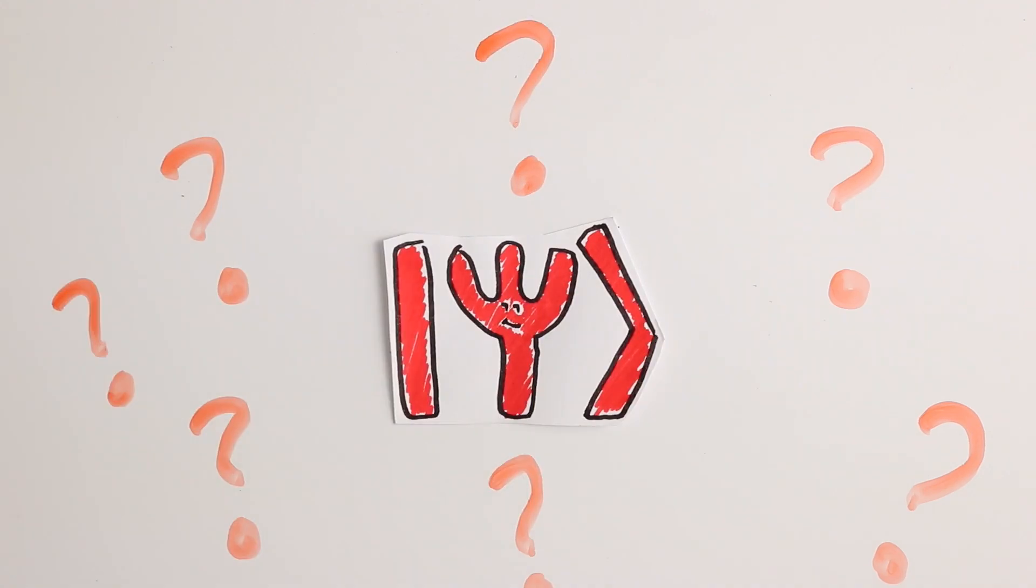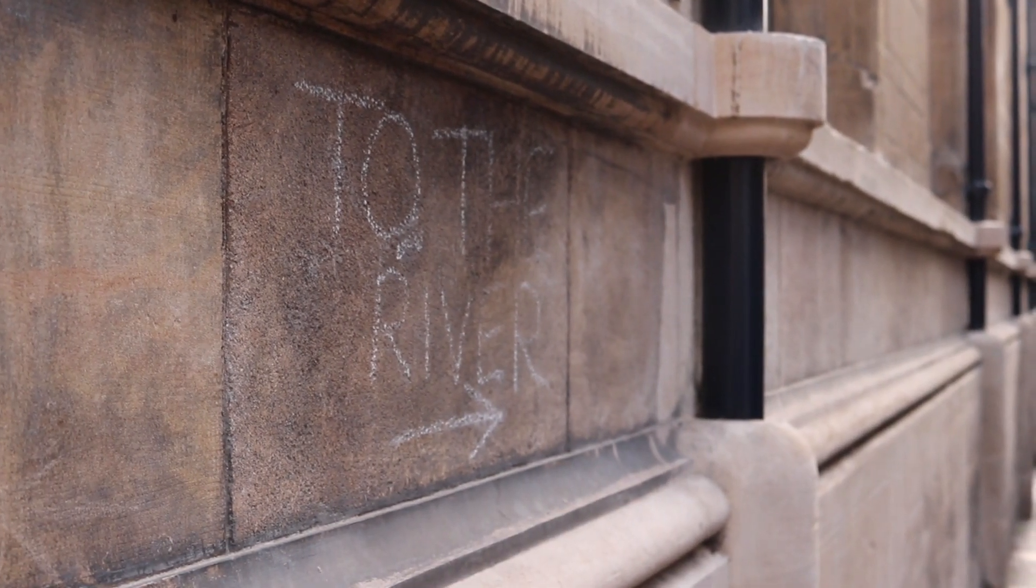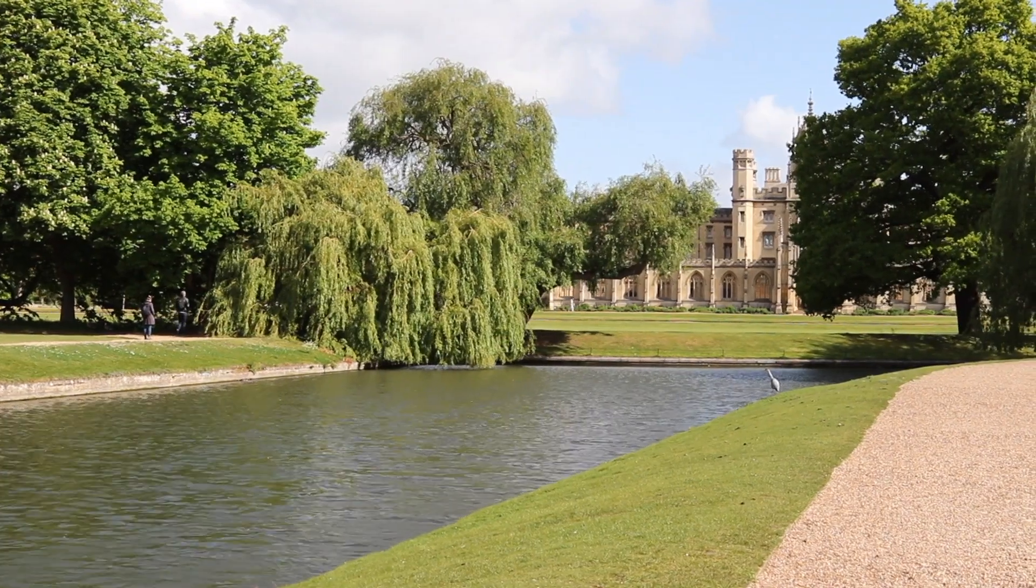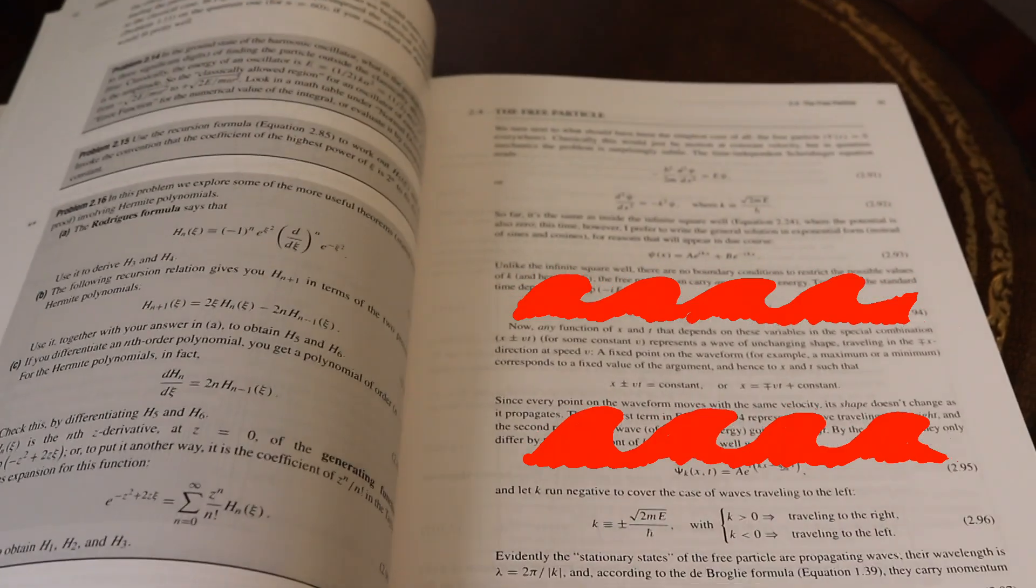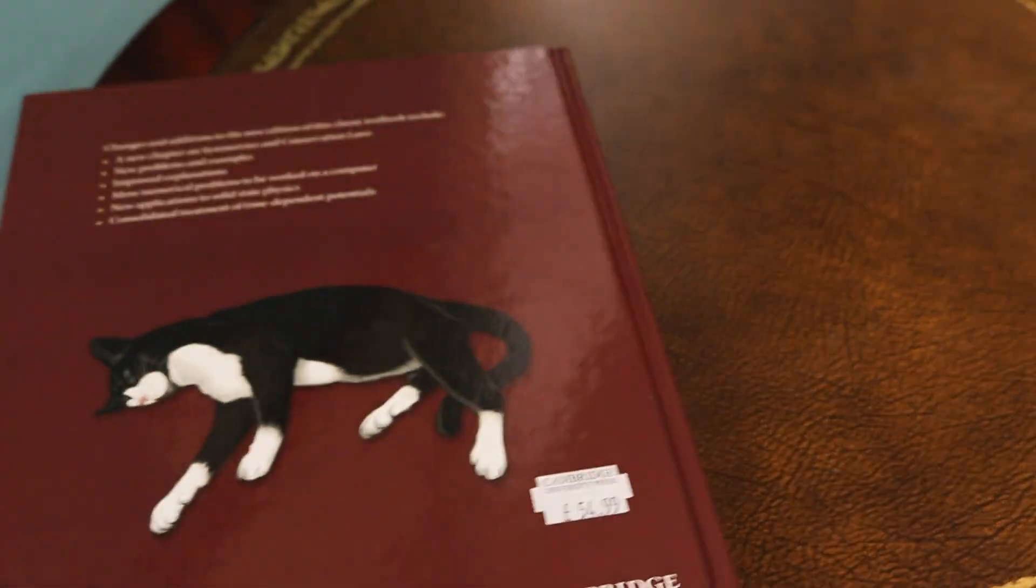These are questions that quantum mechanics doesn't yet have the answer for, which is why this part of physics has so much philosophical debate around it. We don't fully understand what quantum mechanics is trying to say about how the world works. Whatever it is, it's not as simple as saying that objects are sometimes acting like waves, and sometimes like particles.